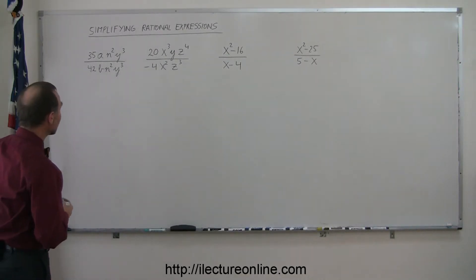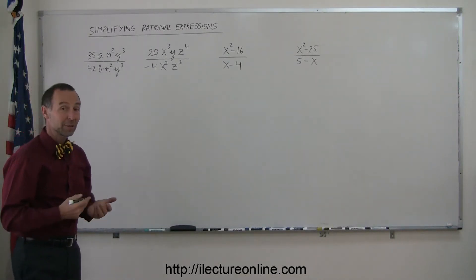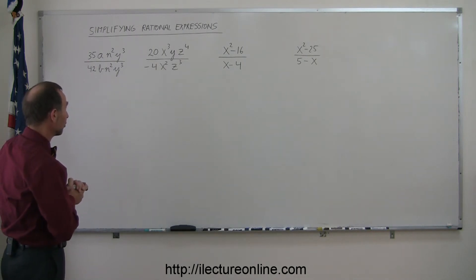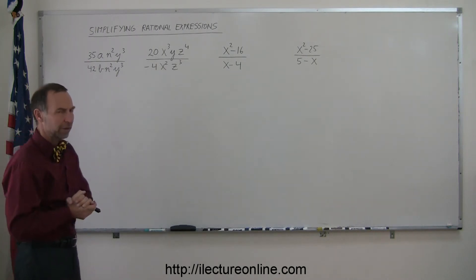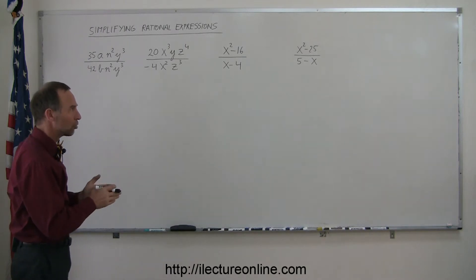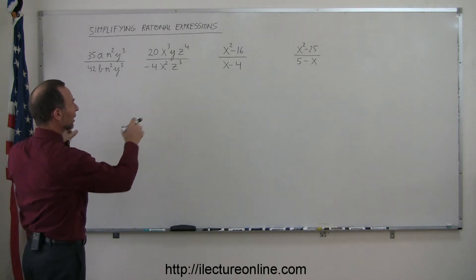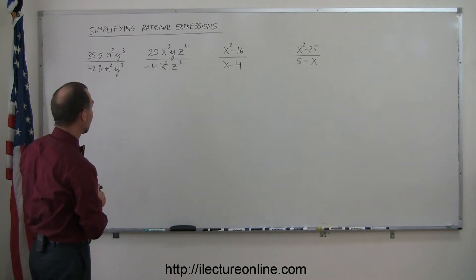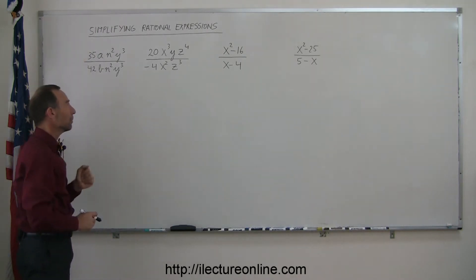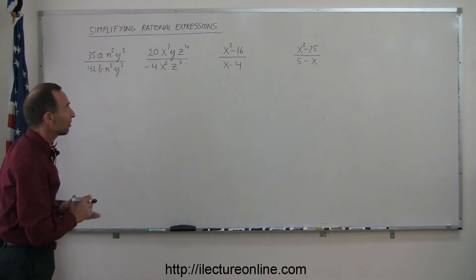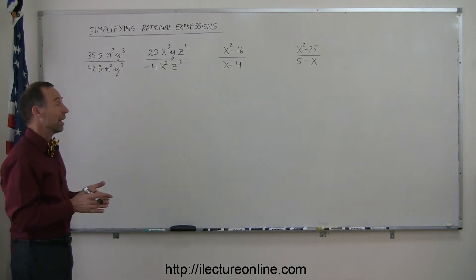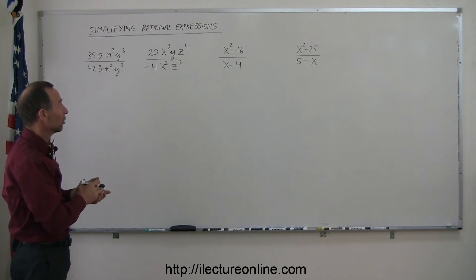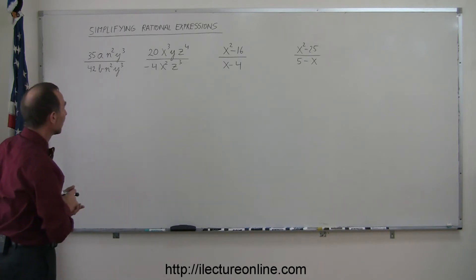Here's some more algebra. In this case, we're going to be talking about simplifying rational expressions. Rational expressions are algebraic expressions — meaning not equations, so there's no equal sign anywhere. These are algebraic expressions written in fraction form with a numerator and a denominator. Simplifying means we're looking for common factors in the numerator and denominator so we can cancel them out.